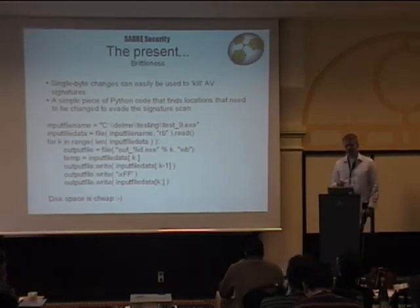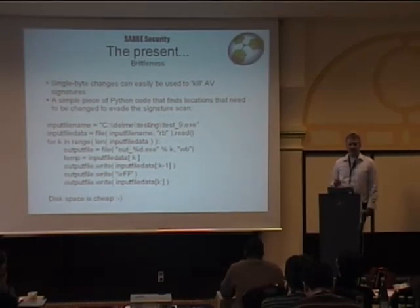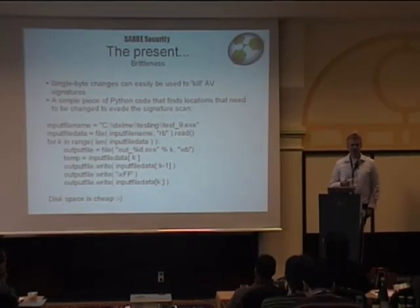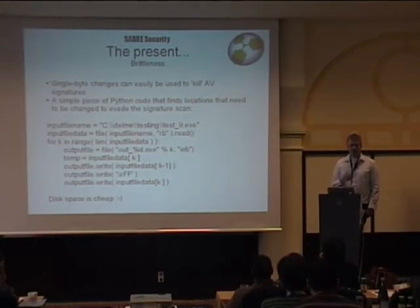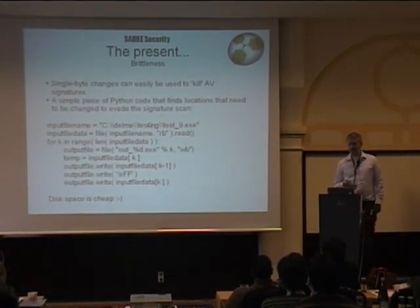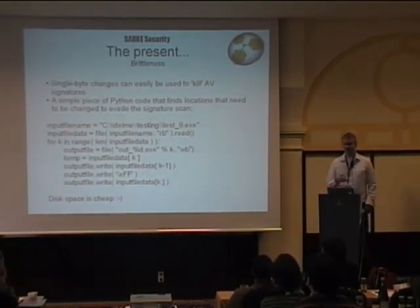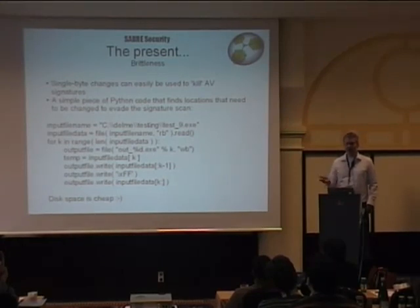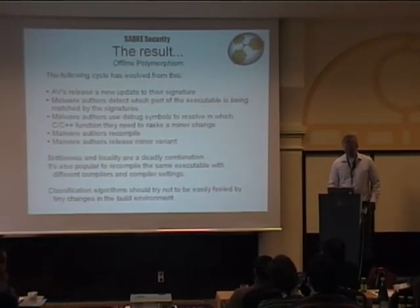Extracting signatures from antivirus engines is really easy with a black box attack. Storage is really cheap these days — you have your bot, you notice AV is adding signatures, and you want to know what to change. You take a file of say 70k, make 70,000 copies flipping one byte at a time, and scan again. The AV will flag 69,500-something as infected and a few as not — and you've just isolated the bytes responsible for identification. You look at your debug symbols, get a list of functions to recompile with different compilation options, and release the bot again. This entire process of offline polymorphism can be automated, and I'm quite sure this is already being done.